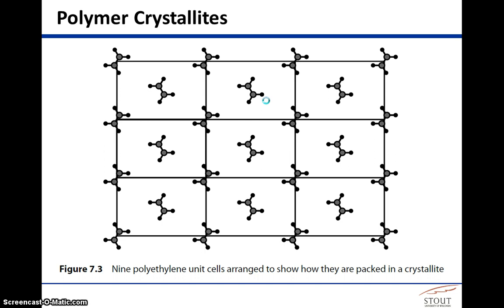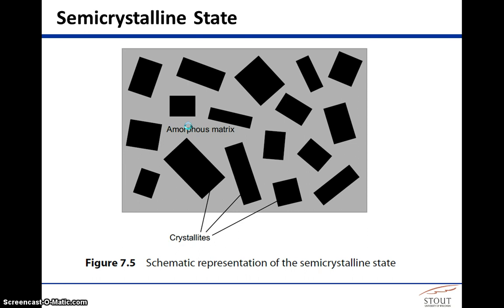Looking at the bigger picture, the black squares schematically show the crystalline domains, while the gray regions are the amorphous domains. As you would expect, there is higher density in the crystalline domain because it is simply packed tighter.